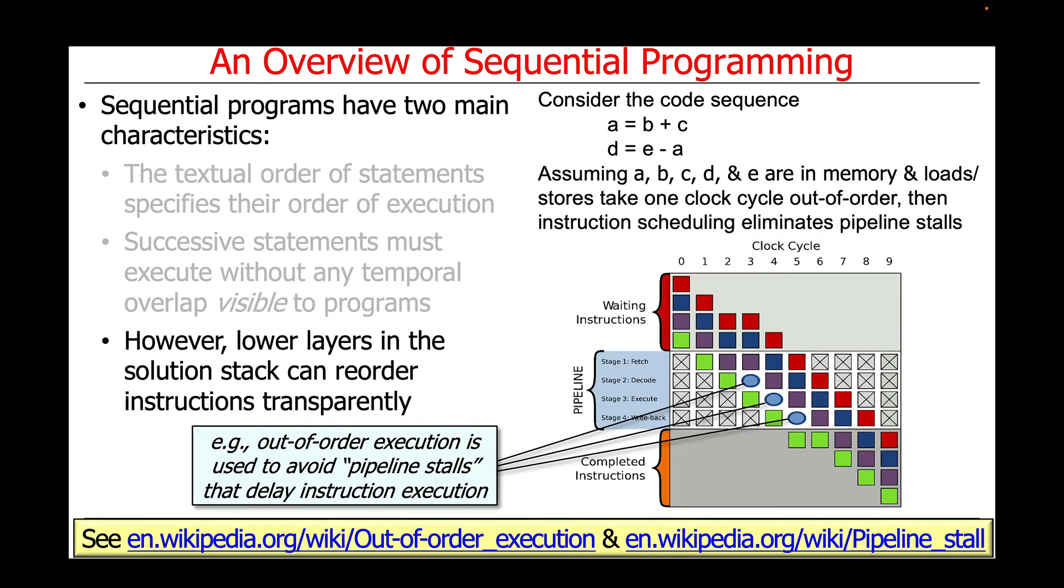So what does this all mean in practice? Let's take a look at an example that would be common in a modern pipeline hardware environment, where it's possible to do out-of-order execution of instructions to avoid pipeline stalls that would otherwise delay instruction execution.